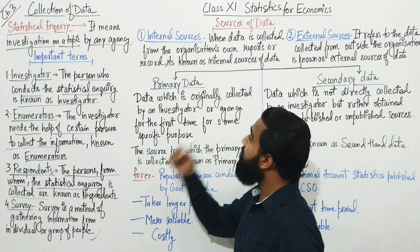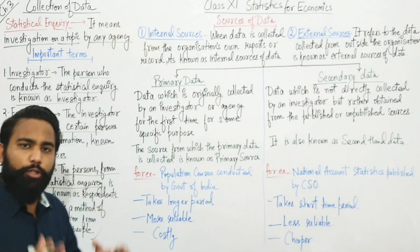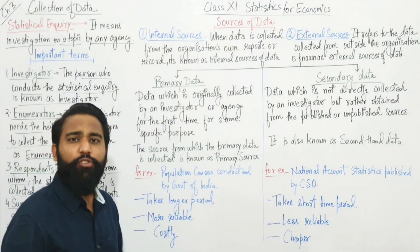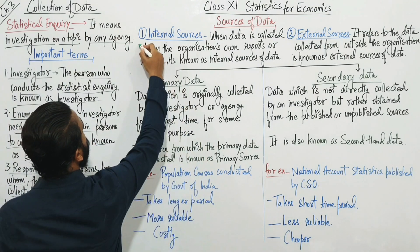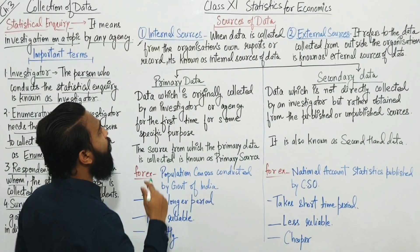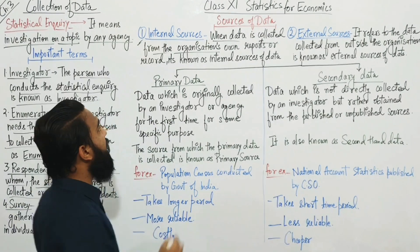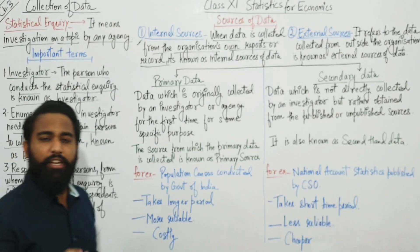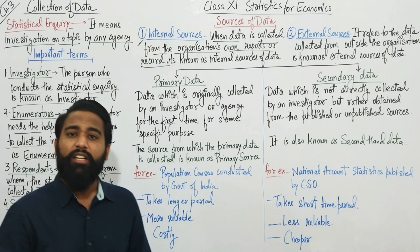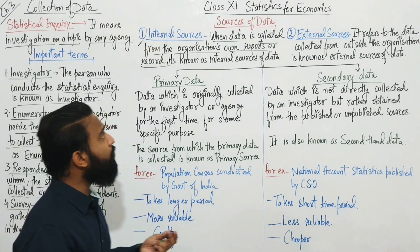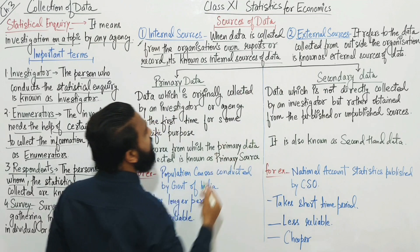Now let's come to the next topic, which is sources of data. There are two types of sources from which we can collect information or data. The first source is internal sources. When data is collected from the organization's own reports and records — such as journals, ledgers, and balance sheets — that is known as an internal source of data.